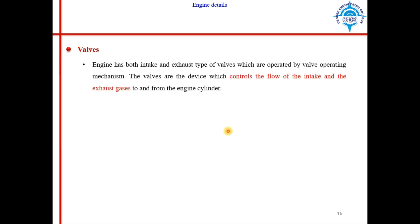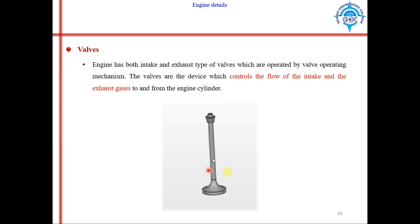The next component is the valve. Engines have both intake and exhaust type valves, which are operated by the valve opening mechanism. The valves are operated through the camshaft, push rod, and lever mechanism. The valves are devices which control the flow of intake and exhaust gases — they are responsible for the flow of fuel into the cylinder and the flow of exhaust gases out of the cylinder.